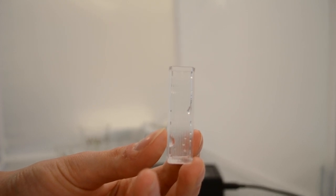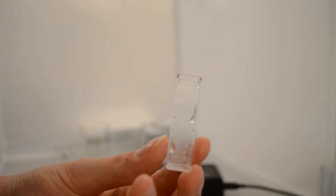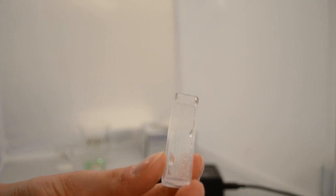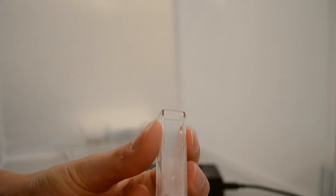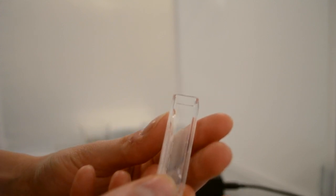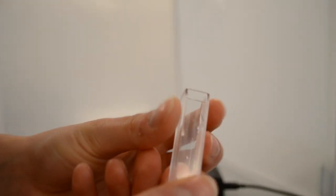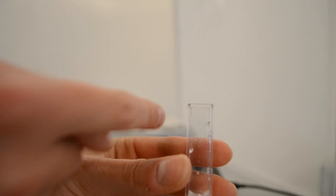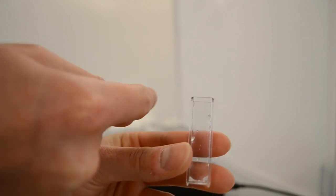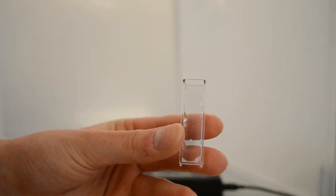The cuvettes have two frosted sides and two clear sides. The light has to run through the clear sides. The light in these specs runs from the right to the left, so make sure to place the cuvette so that the clear sides are on the right and the left. If the light runs through the frosted sides, the data will be incorrect.